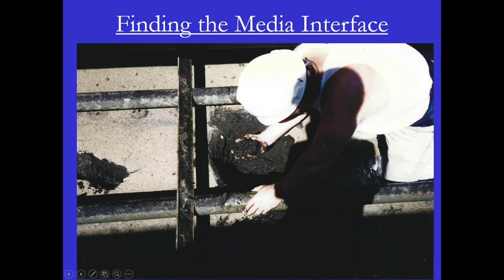Another thing you want to look for is if you have a dual media filter — this filter in particular is anthracite and sand. How big is the interface between the anthracite and the sand? It shouldn't be more than a couple of inches if the filter is in good condition. If it's six, seven, or eight inches, that's an indication either the media wasn't properly sized or there's a problem with the backwash procedure.